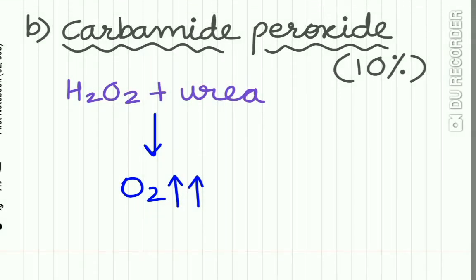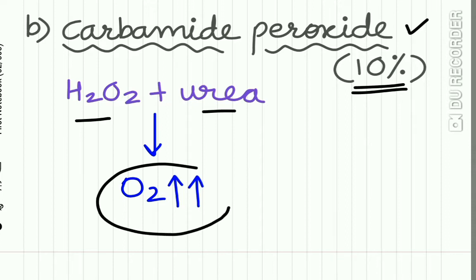The next oxygenating agent is carbamide peroxide at a concentration of 10%. It is hydrogen peroxide plus urea in equimolar complex. This combination releases oxygen when it comes in contact with water, giving a bleaching effect to the tooth.